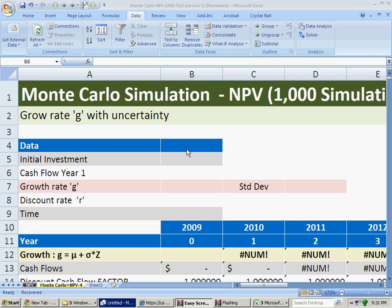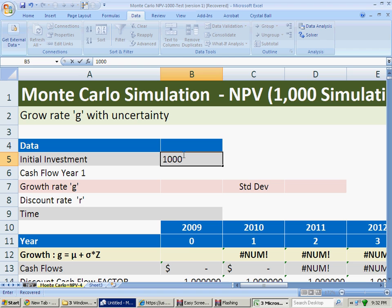Here we are again with the Monte Carlo simulation on application to the net present value. These are typical data values for the net present value. In this particular example, we are going to consider the following values. The initial investment is going to be $1,000.